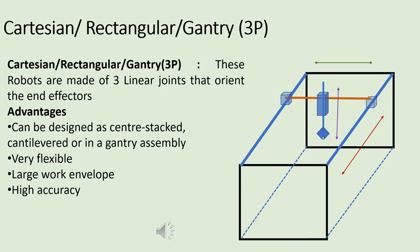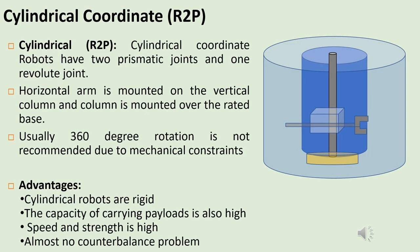Cartesian, rectangular, or gantry type robots are made of three linear joints that orient the end effector. These joints are prismatic joints for linear motion. The advantages of these robots are that they can be designed as a center stack, cantilevered, or gantry assembly, which is very flexible. They have a large work volume and high positional accuracy.